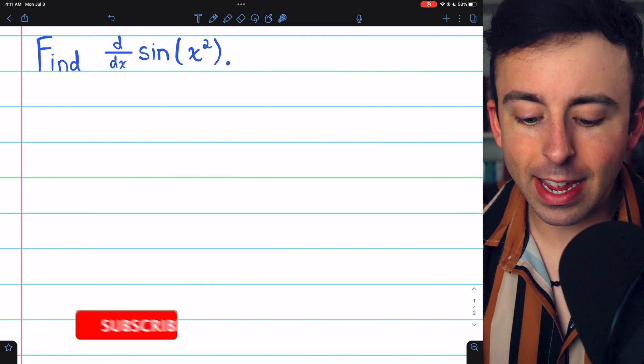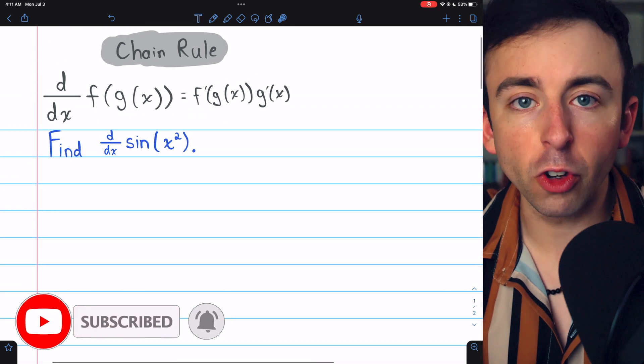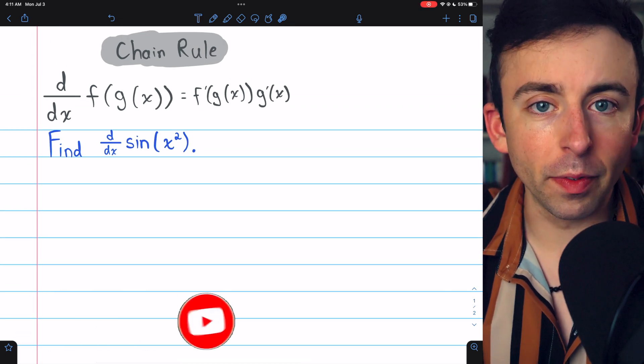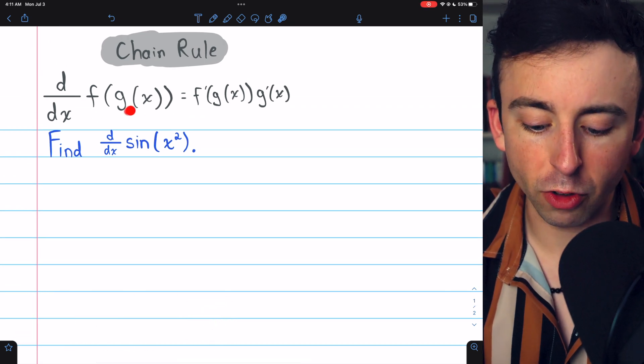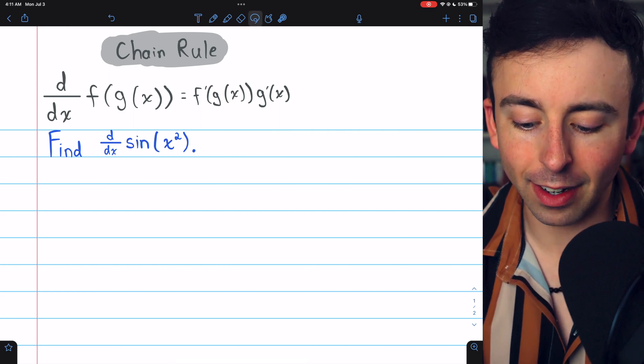Sine of x squared is a composite function, so to find its derivative, we're going to need to use the chain rule, which tells us the derivative of a composite function, f of g of x, equals f prime of g of x times g prime of x.